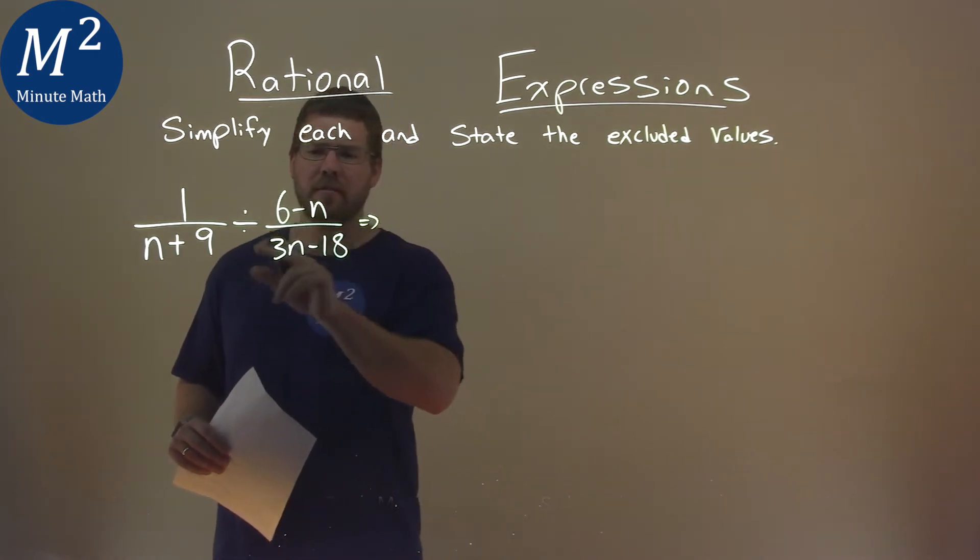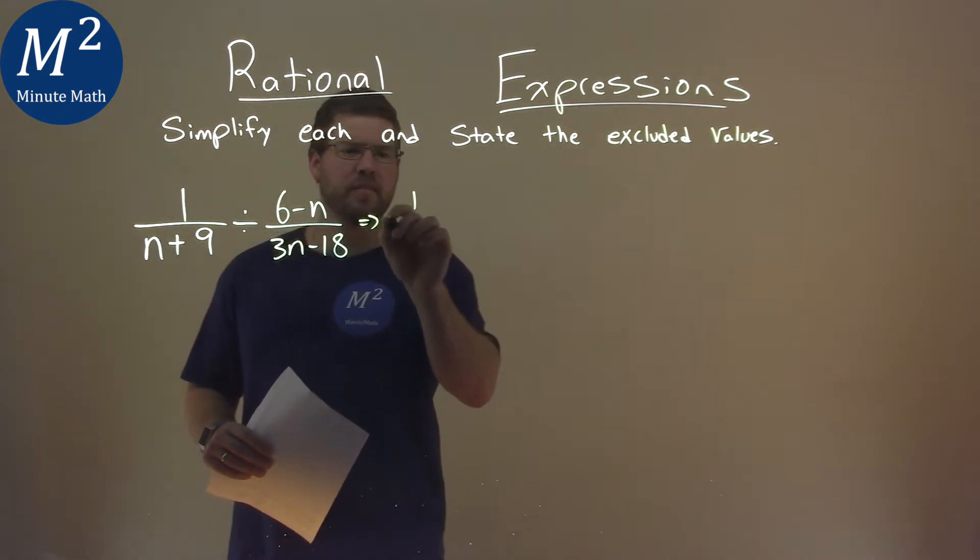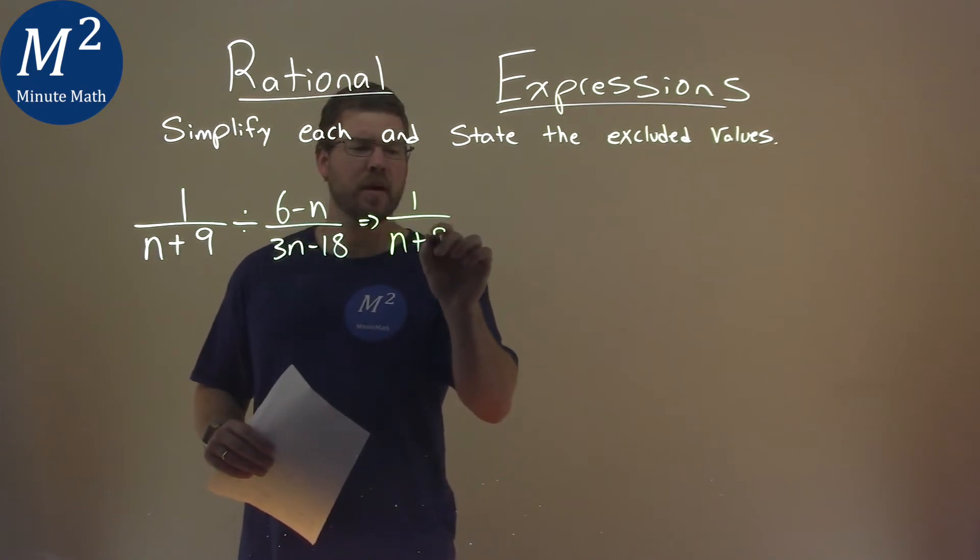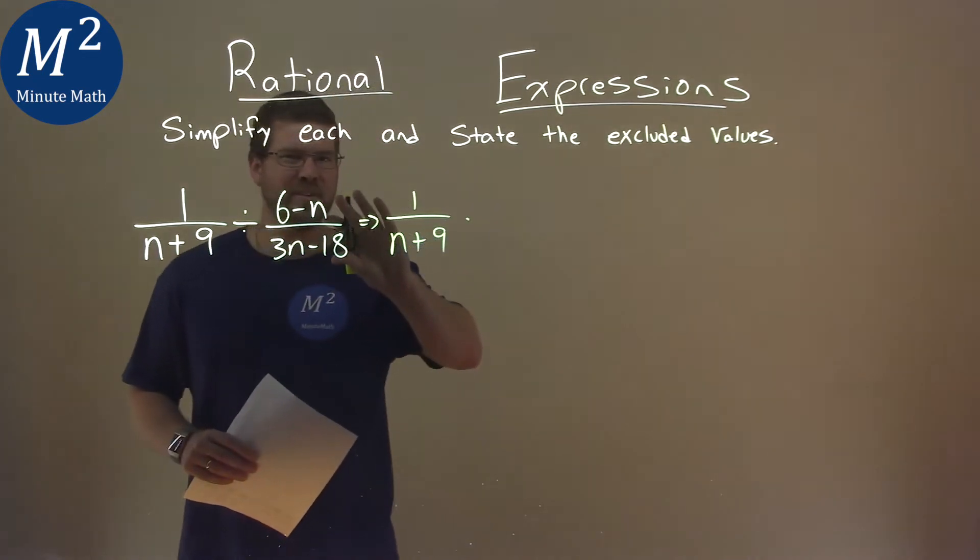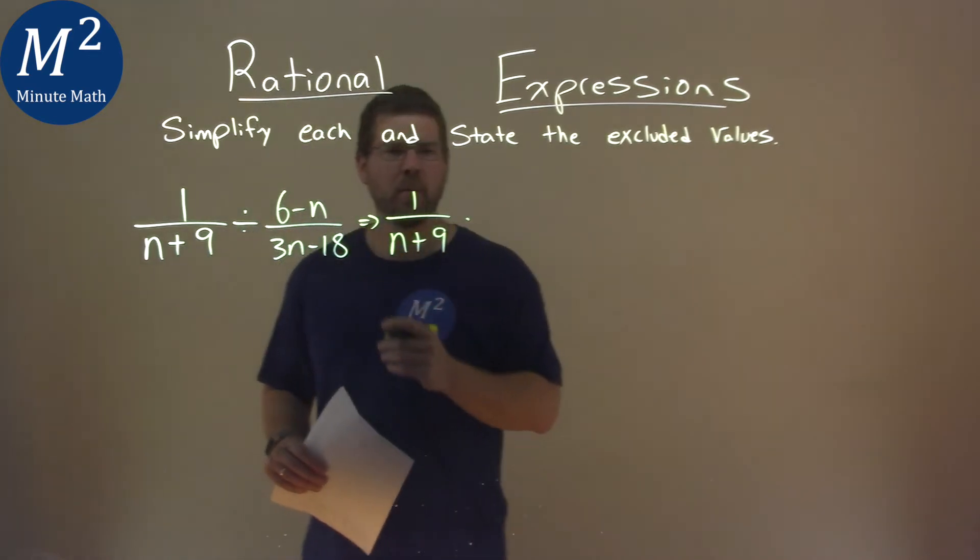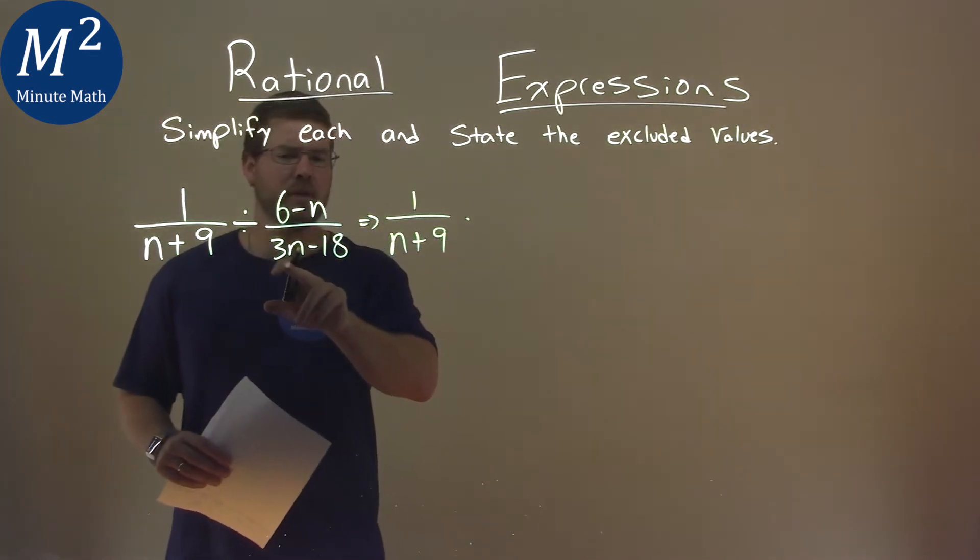Well first, I don't like to have division. Let's write this as a multiplication. So we have 1 over n plus 9, and with multiplication we need to flip this fraction, and while we're doing that let's go pull out the 3 here.